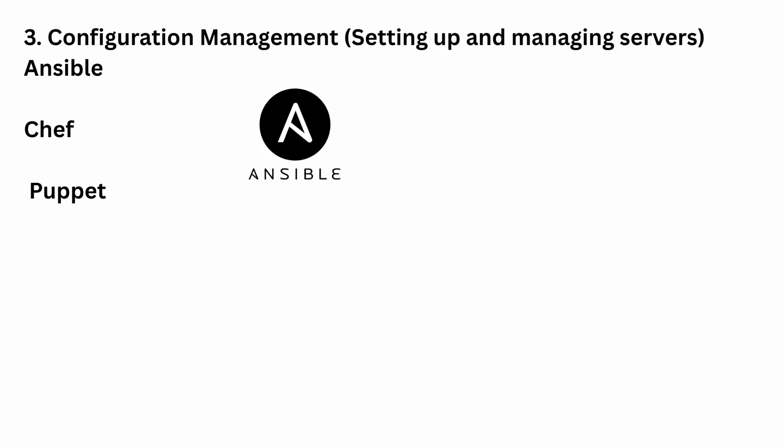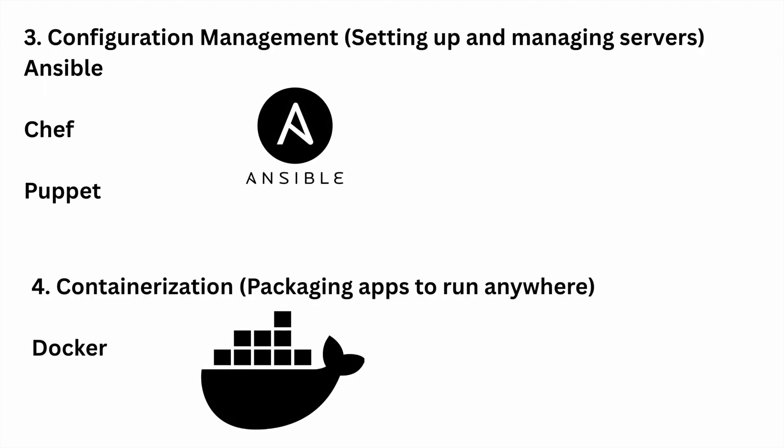Next is configuration management. These tools are used to automate software installation and updates — for example Ansible, Chef, and Puppet. Next is containerization. These tools are used to package applications and their dependencies into containers so they can run the same way everywhere.